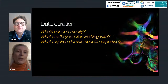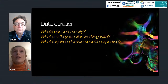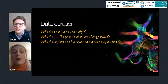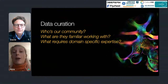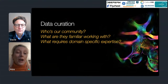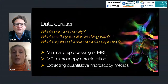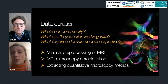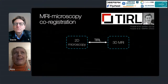A really important part of open data is being able to present it in a format that is highly accessible to the community. We asked: who is our community, what file types and tools are they familiar with, what aspects of our data require domain-specific expertise, and how can we abstract most of that away from the end user? We had three things to tackle: minimal pre-processing of the MRI, including distortion correction, registration, and surface extraction; MRI–microscopy co-registration; and extracting quantitative microscopy metrics from the histological stains.